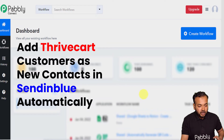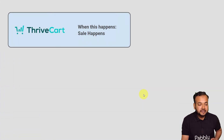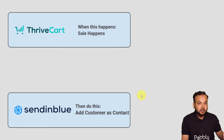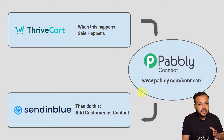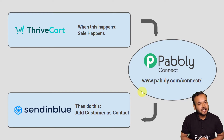So let us begin. The flow of this automation is that as and when a sale happens in Thrivecart, the customer purchasing your product will be added as a contact in Sendinblue. To make this happen, we are using Pably Connect, which is an integration and automation tool. The best part is that you will not require any coding skills or programming knowledge.